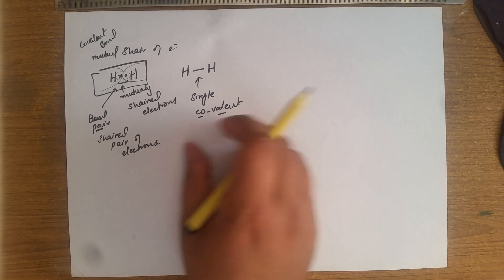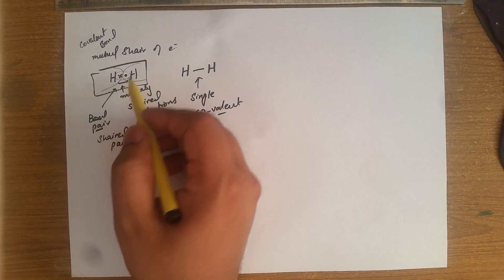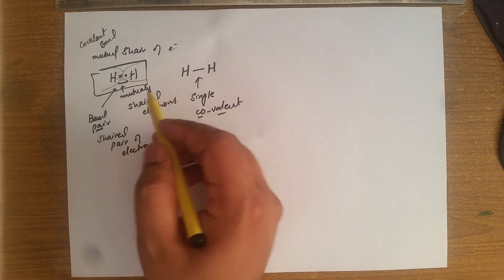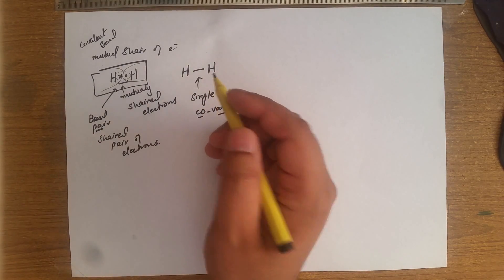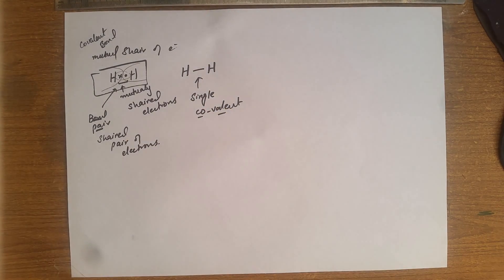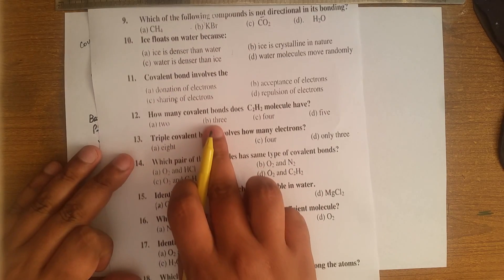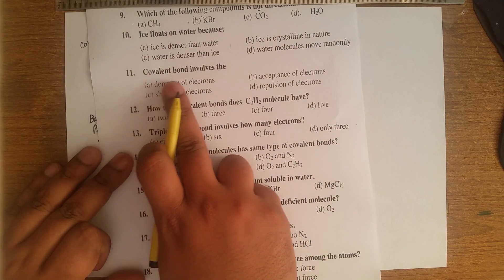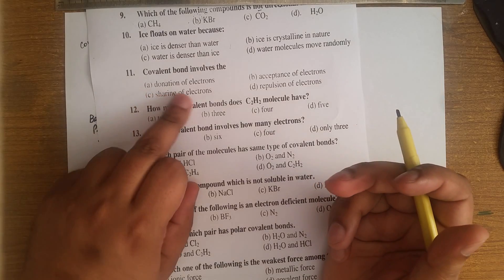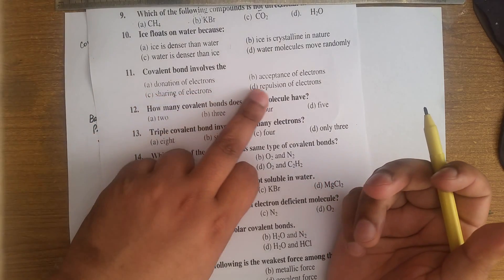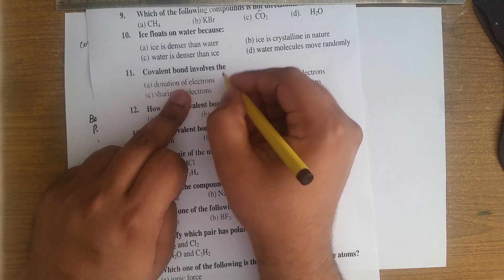Covalent means the two valence electrons are shared. Remember that hydrogen bonds to complete the duplet rule. Now for MCQ 11: covalent bond involves the sharing of electrons, not the donation or acceptance of electrons.